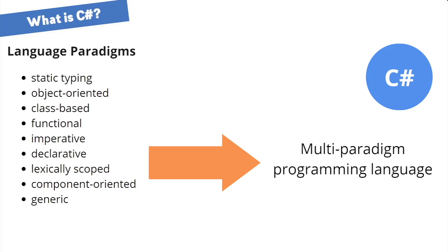Most modern programming languages do not fit exclusively into one language paradigm. To make a programming language usable in as many scenarios as possible, it needs to be very flexible. Multi-paradigm programming languages allow developers to choose from a variety of language features to solve a problem — hence they are called general-purpose programming languages.